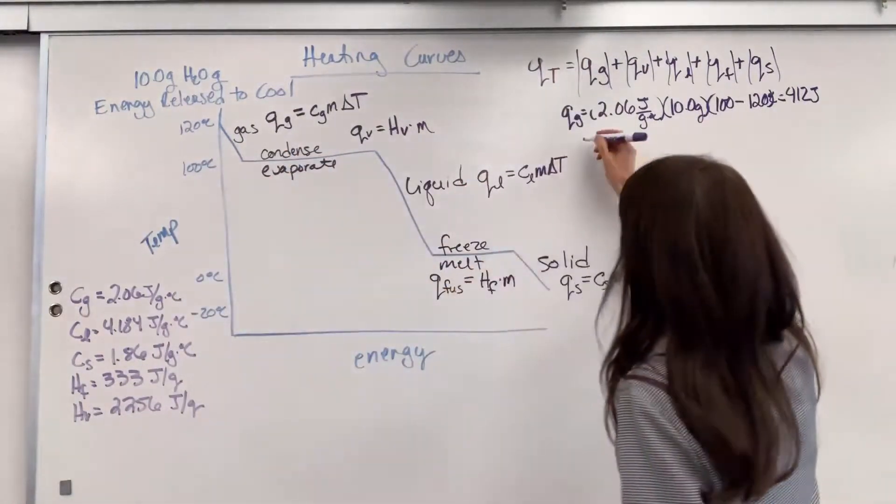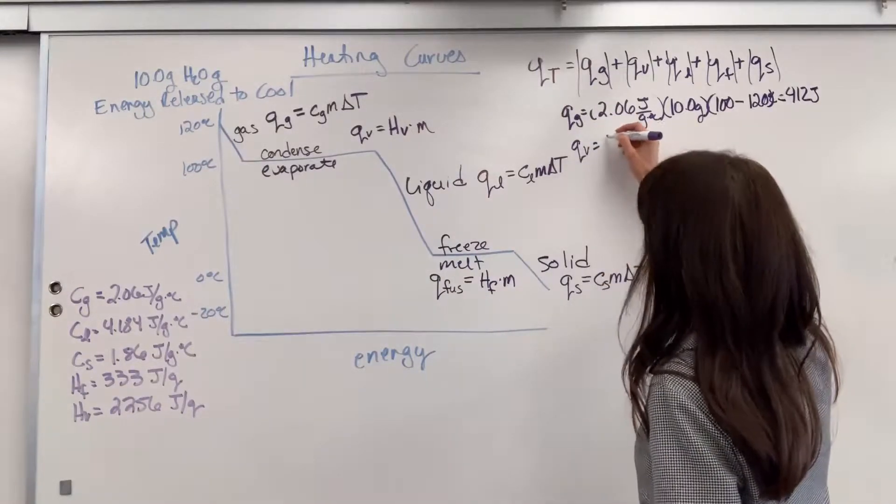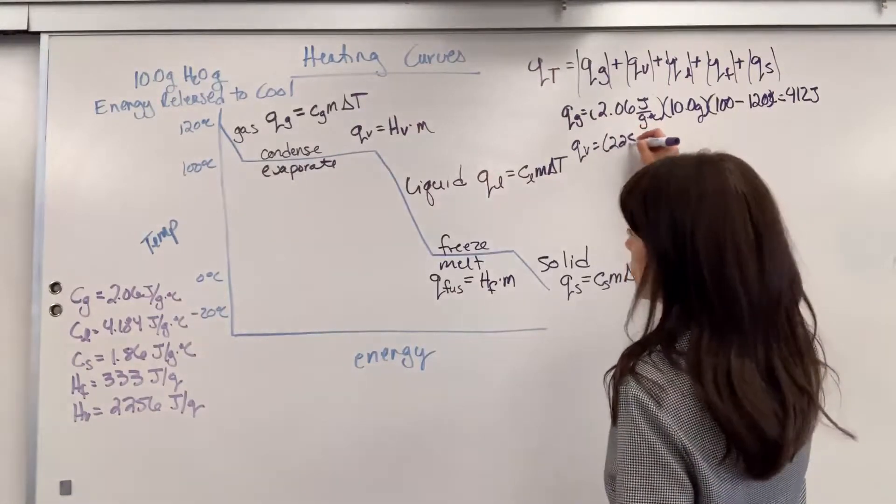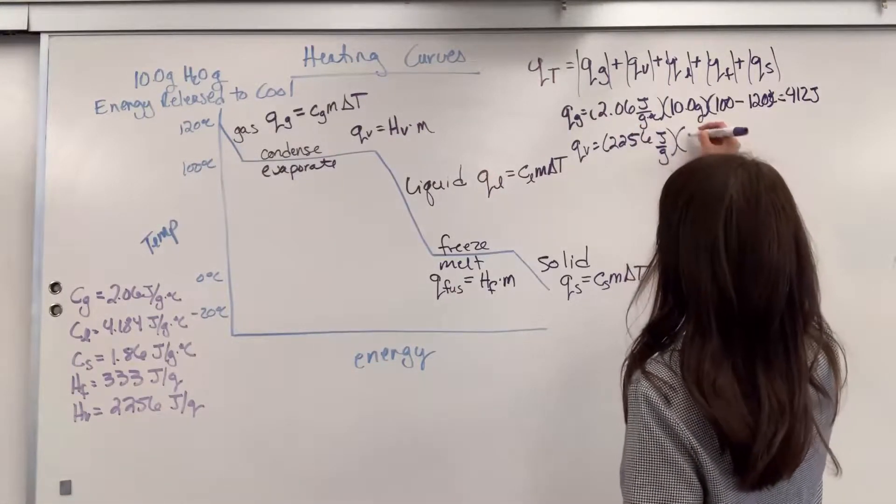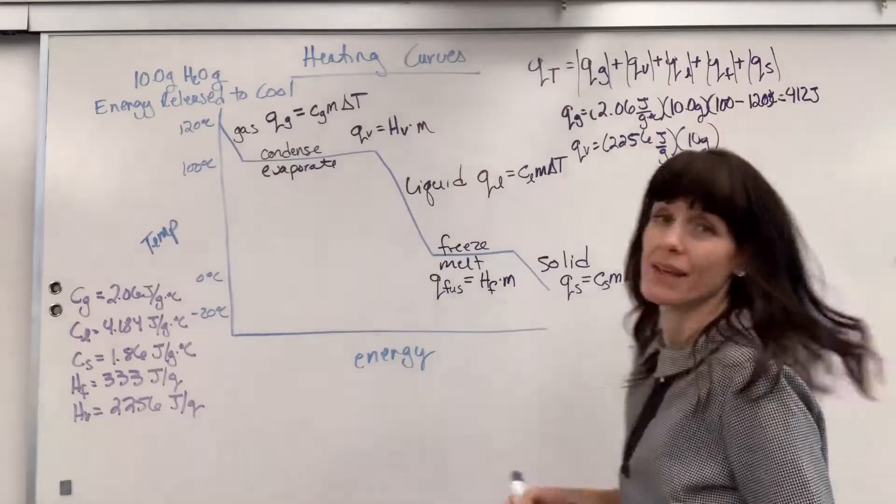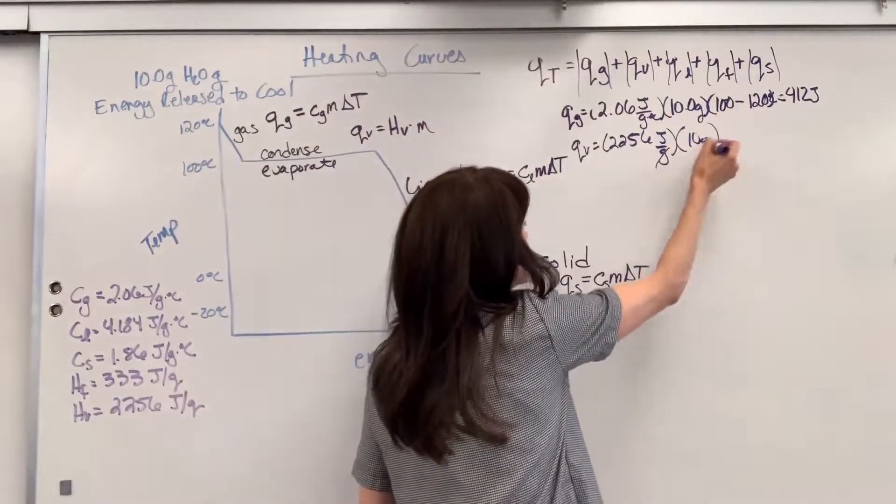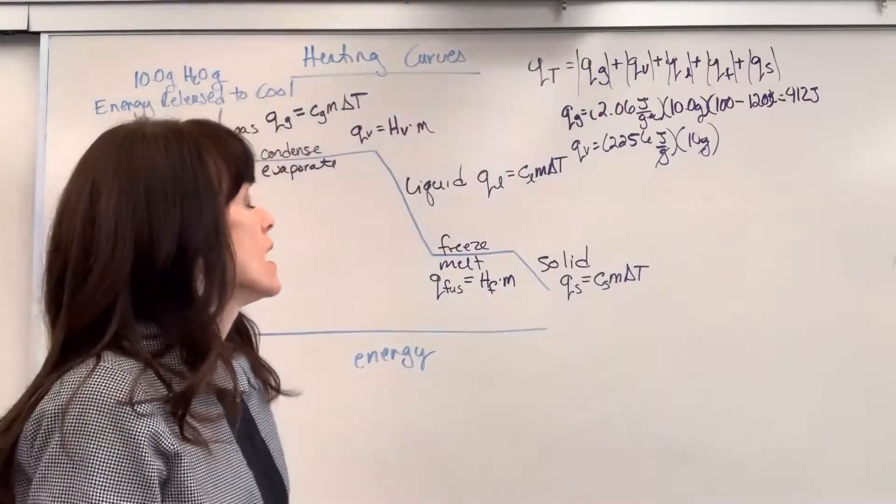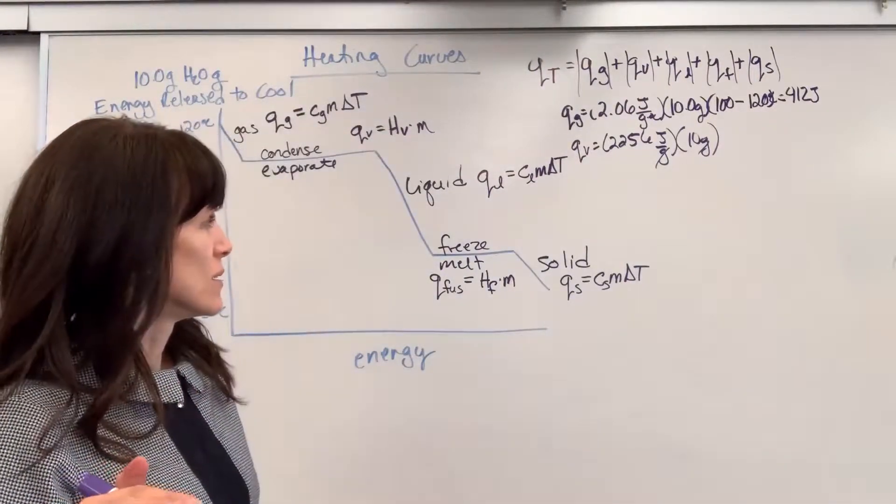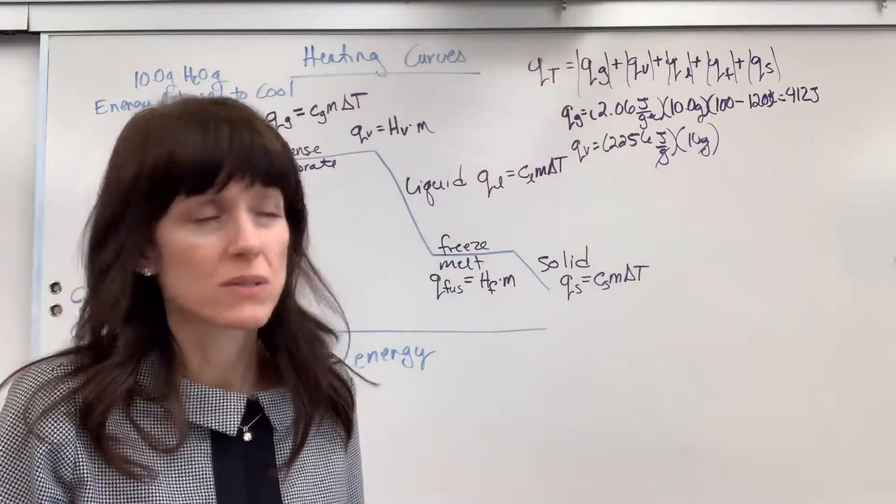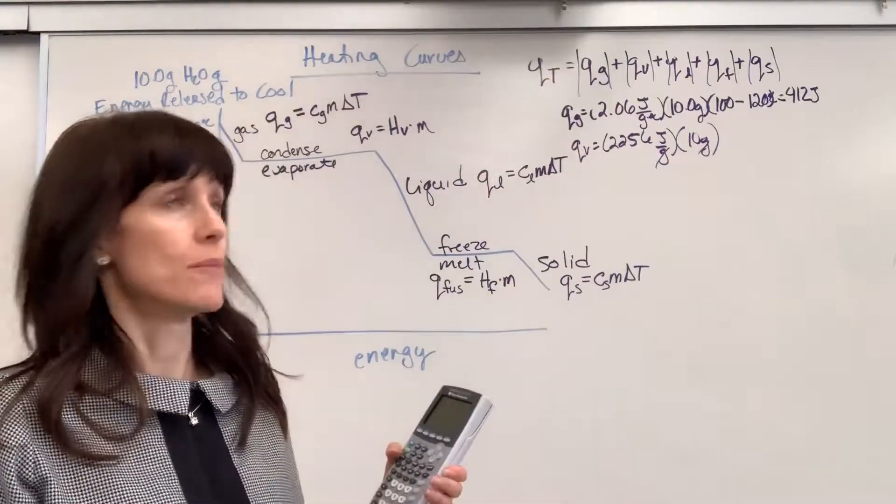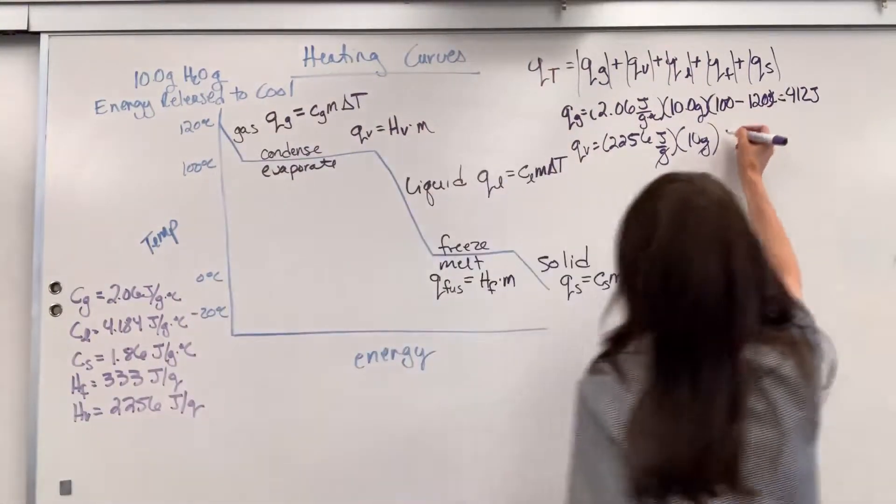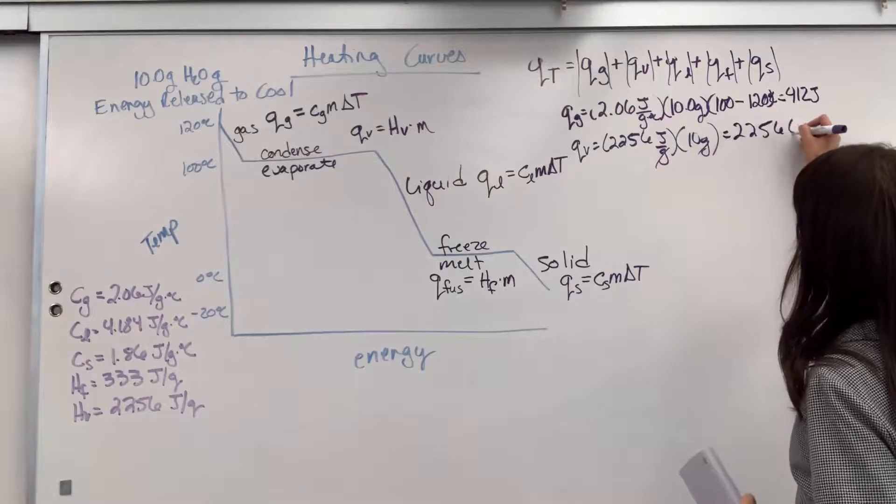Now, let's do our Q of vaporization. This is going to be heat of vaporization. I look on my table. 2,256 joules per gram times my 10 grams. Now, notice on this. Grams cancel. We'll end with joules. That's why there's no delta T in this. And notice if I multiply this, I get a positive number. So, you can see where the problem would start to come if I had left this in negative. So, do absolute values. We are going to get 22,560.